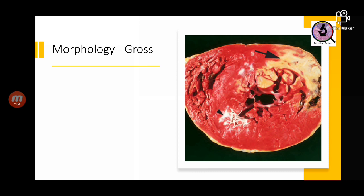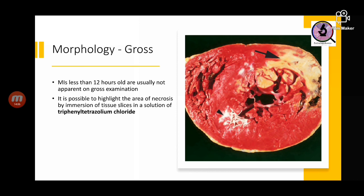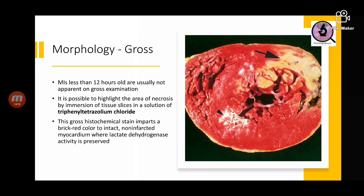Looking at morphology: grossly, if an infarct is less than 12 hours old we may not be able to identify it. However, using a dye called triphenyltetrazolium chloride (TTC), it is possible to highlight the area of necrosis. Viable muscle appears red whereas the infarcted area appears grey. In viable myocardium, lactate dehydrogenase (LDH) is preserved and the stain marks it red. In infarcted myocardium, LDH is lost and that area does not appear red.